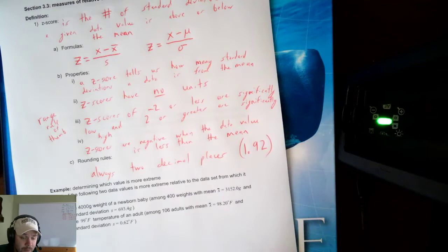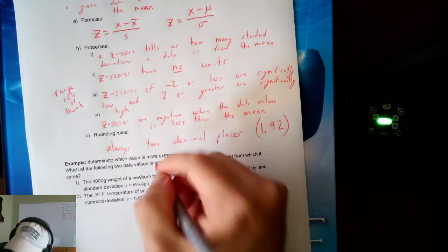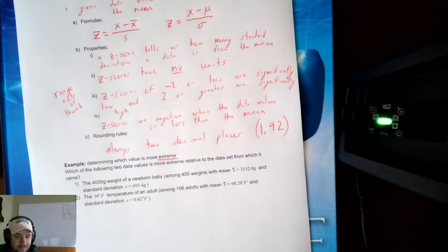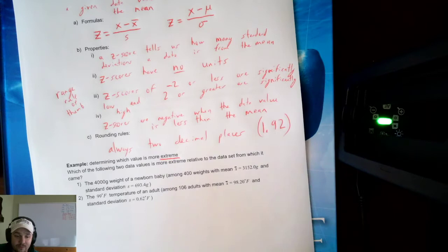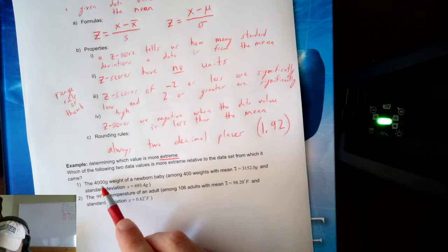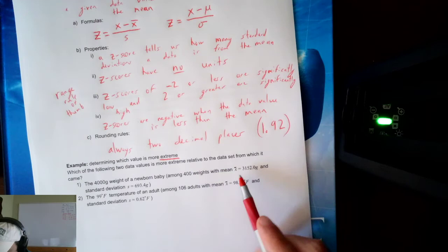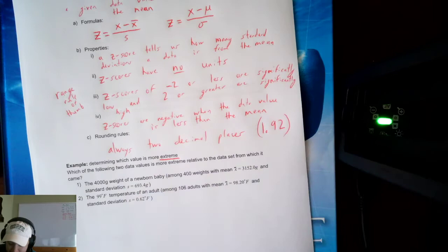Now let's look at an example: determining which value is more extreme — which value is farther away from the mean relative to the data set it came from. We need to calculate the z-scores for each value. The first value is a 4,000-gram baby, taken from a sample of 400 weights with a mean of 3152 and a standard deviation of 693.4.